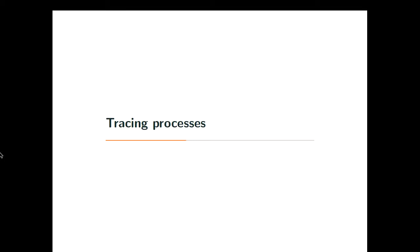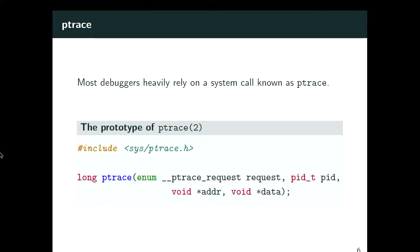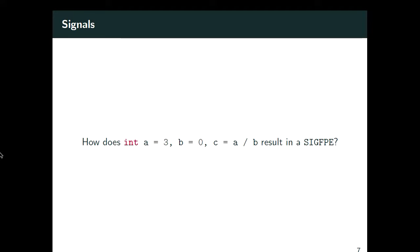With the history behind us, let's talk about how we trace a process and start debugging. This is the system call ptrace. It's a system call where you give requests and a target process ID, and that particular process can be manipulated or information can be requested about it. Most debuggers heavily rely on ptrace because it's a portable way across different architectures — the same code that works on x86 will also probably work on ARM.